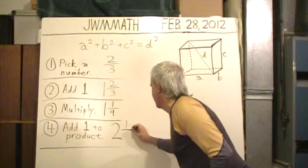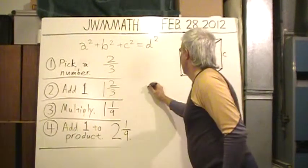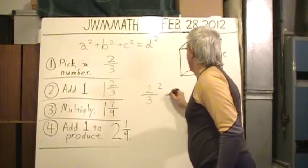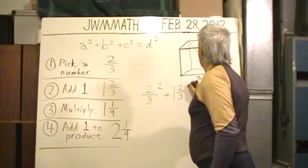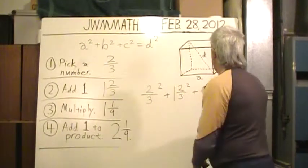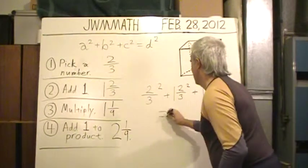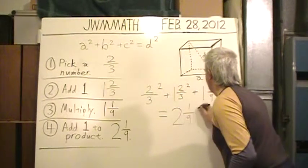You'll get two and one-ninth. So, I am claiming that two-thirds squared plus one and two-thirds squared plus one and one-ninth squared equals two and one-ninth squared.